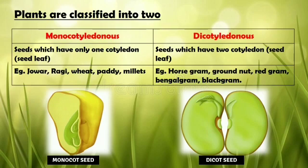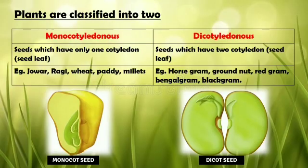Dicotyledon seeds have two cotyledons, meaning two leaves will sprout first during germination. Examples include horse gram, groundnut, red gram, Bengal gram, black gram, etc. The picture on the right side is a dicot seed.